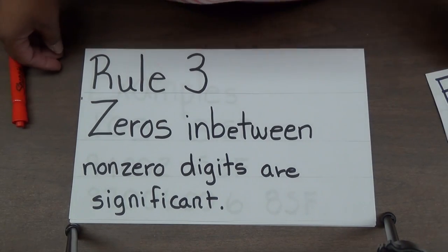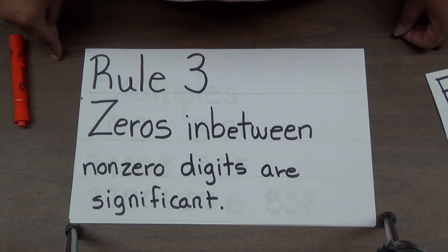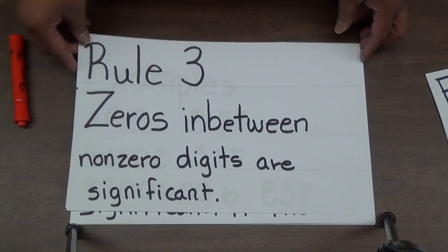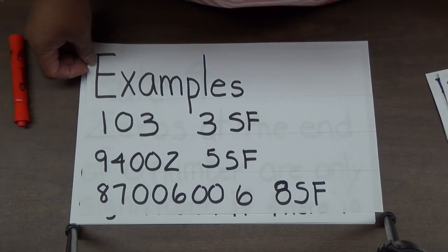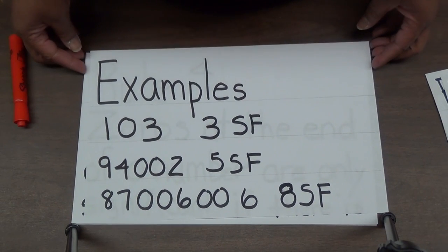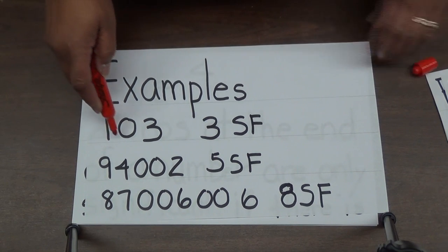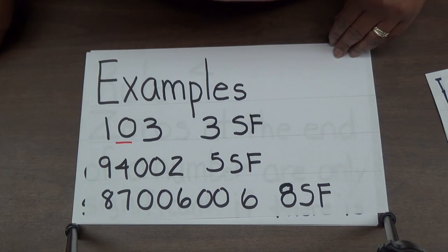Rule three also deals with zeros. Zeros in between nonzero digits are always significant. Some textbooks may refer to them as trapped zeros. For example, the number 103 — there's a zero that's trapped between the 1 and the 3 — has three significant figures.